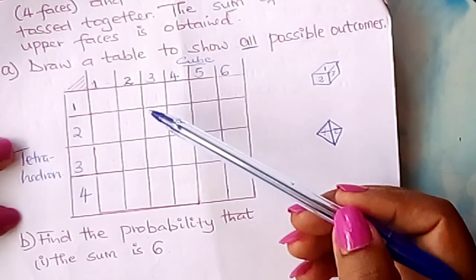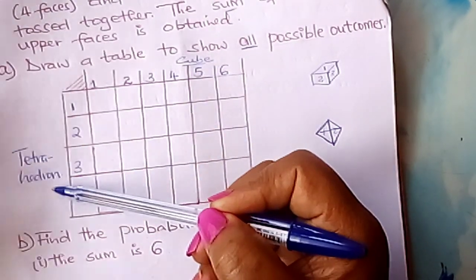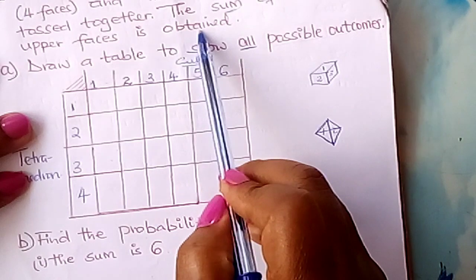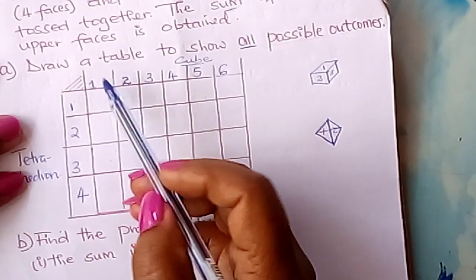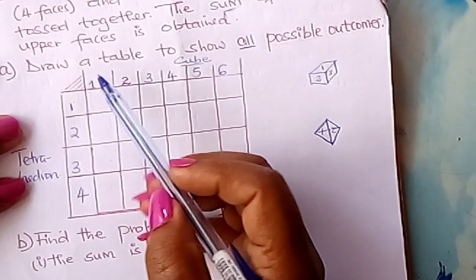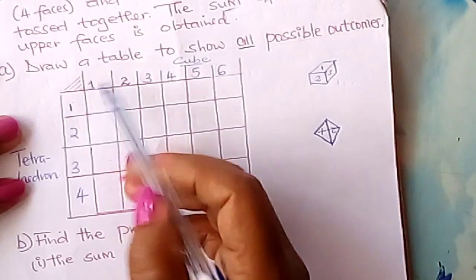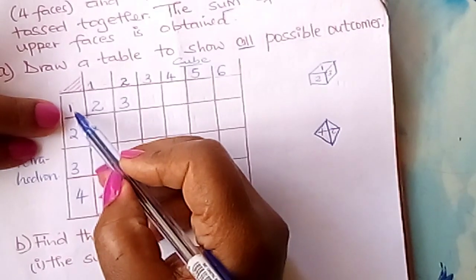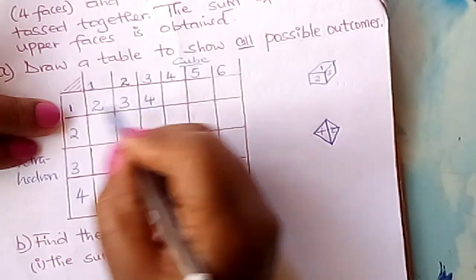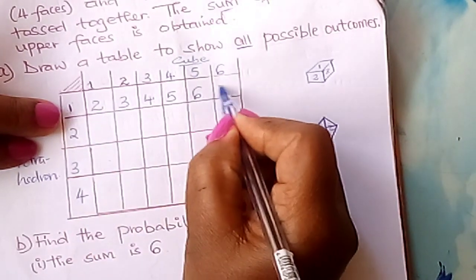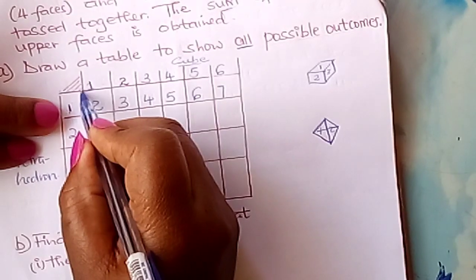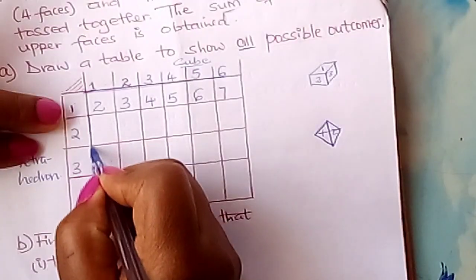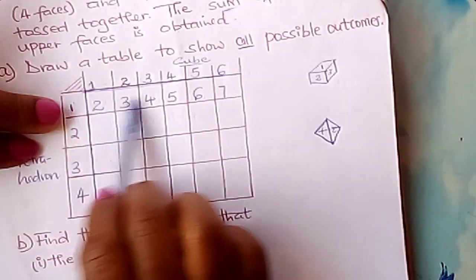The cube and the tetrahedron are thrown together, and the sum of the two upper faces is obtained. Sum means addition. So for the first row, one plus one gives two; one plus two gives three; one plus three gives four; one plus four gives five; one plus five gives six; one plus six gives seven. Let me put a boundary so we can see all the possible outcomes inside.